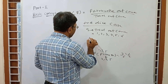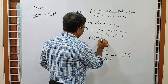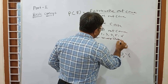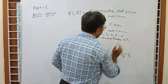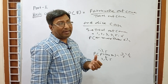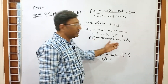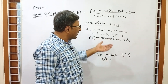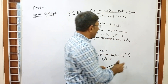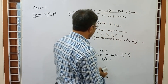Find the probability of a number more than 6. In our outcome set, there are only numbers 1 to 6 — not more than 6. So favorable outcome is 0. The answer is 0/6 = 0.